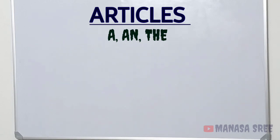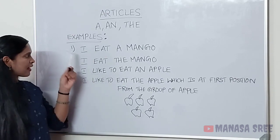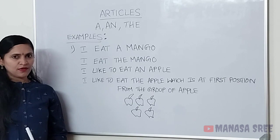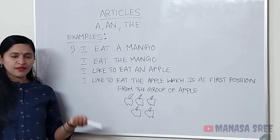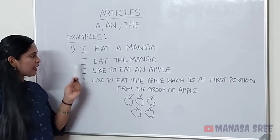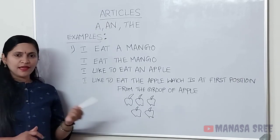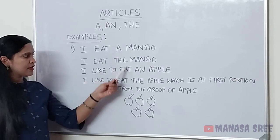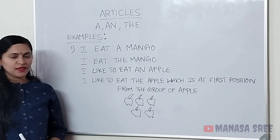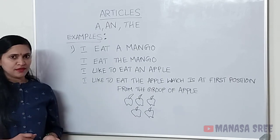So friends, examples for 'a' and 'the'. I eat a mango — general aagi, casual aagi hella vaaga, nanna mango a tiny. I eat a mango. I eat the mango — specific aagi, particular aagi. Nanna mango a tiny, 'the' hello vaaga — that use maatthi vi. I eat the mango. I like to eat an apple — apple tino dandre nang e ista, general aagi hella vaaga. Nang e apple andre ista — apple nang tintini aant the hello vaaga. I like to eat an apple.